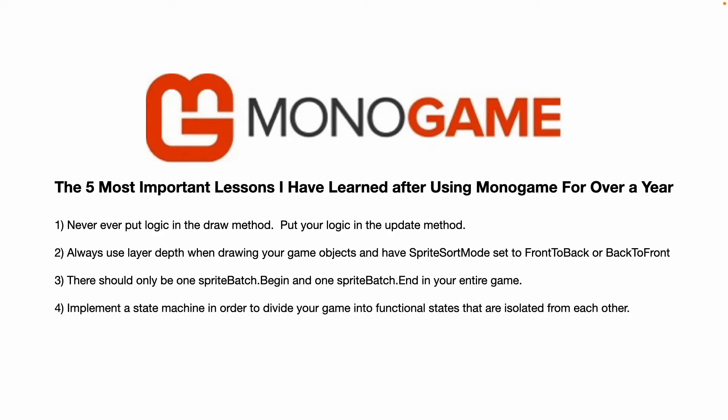Number four: implement a state machine in order to divide your game into functional states that are completely separated from each other. The book Monogame Mastery shows how to do this. In my games I have a splash screen state, gameplay state, and an end state. Each state will have its own initialize, load content, draw, update, and handle input method. Without a state machine your Game1.cs will be enormous and more complicated than it needs to be. You can also create states that are just for testing certain elements or scenarios in the game, rather than hacking up your Game1.cs just to test something.